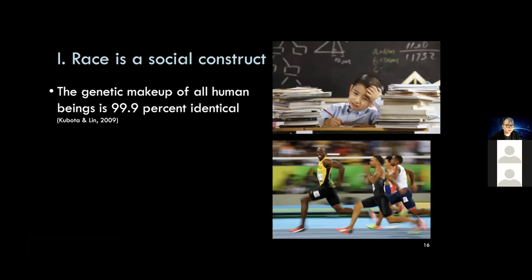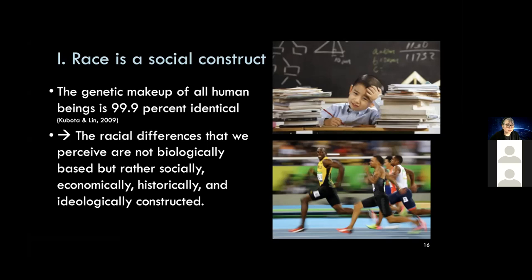So here, too, economic, social, and historical factors greatly influence the racial representation of the athletes. Actually, this topic might be of interest for your class to talk about the racial representations and imbalances in various sports events like swimming, figure skating, basketball, and so forth. So we can say that racial differences that we perceive are not biologically based, but socially, economically, historically, and ideologically constructed. But racial difference in appearance is real. And it becomes a cause of discrimination. So let's take a look at the issue of racism.